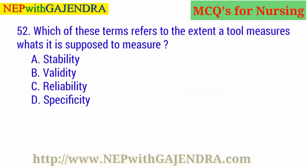Which of these terms refers to the extent a tool measures what it is supposed to measure? A. Stability. B. Validity. C. Reliability. D. Specificity. The right answer is B: Validity.